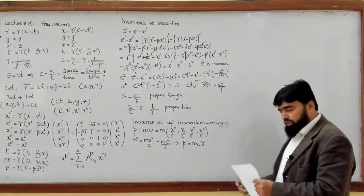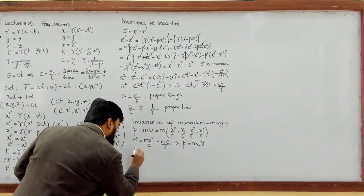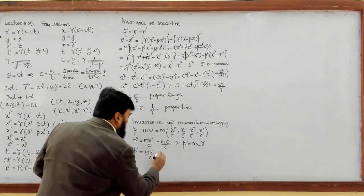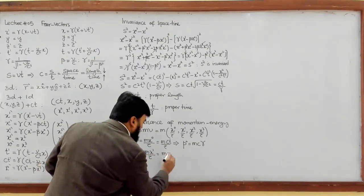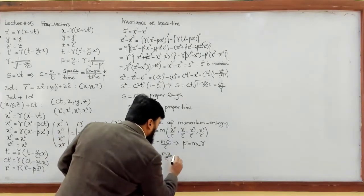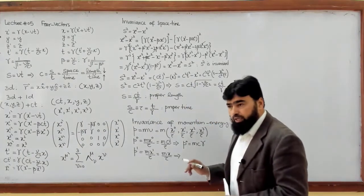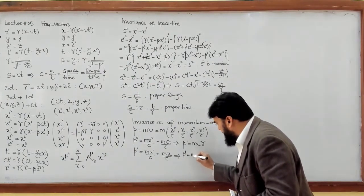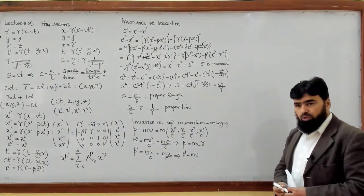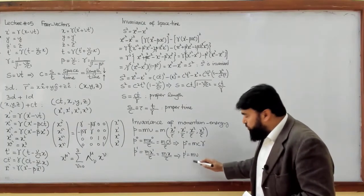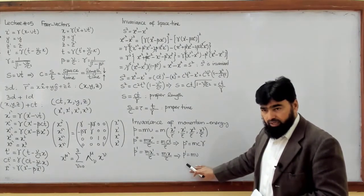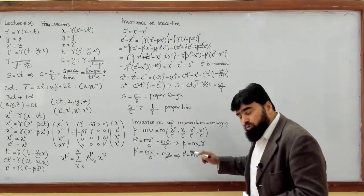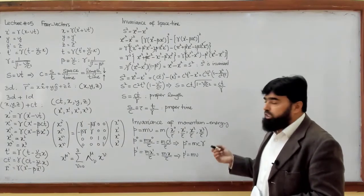Substituting gamma explicitly: p₀ equals mc divided by the square root of (1 minus v²/c²). This is the zeroth component of momentum in four-vector form. For the spatial component, p₁ equals m times x₁ over tau. Since x₁ equals x and x over tau gives velocity, p₁ equals mv — the standard three-dimensional momentum.